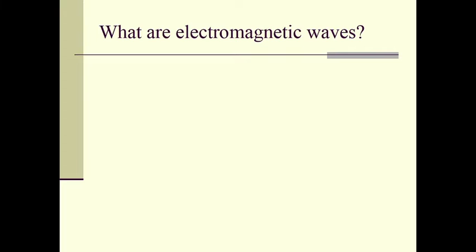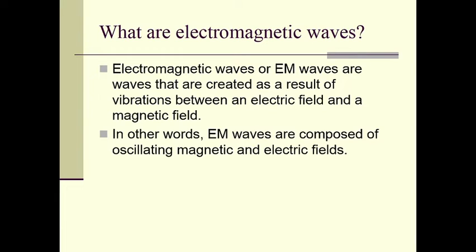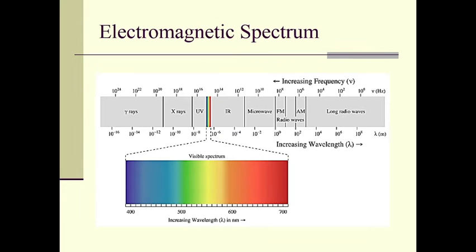Electromagnetic waves or EM waves are waves that are created as a result of vibrations between an electric field and a magnetic field. In other words, electromagnetic waves are composed of oscillating magnetic and electric fields.